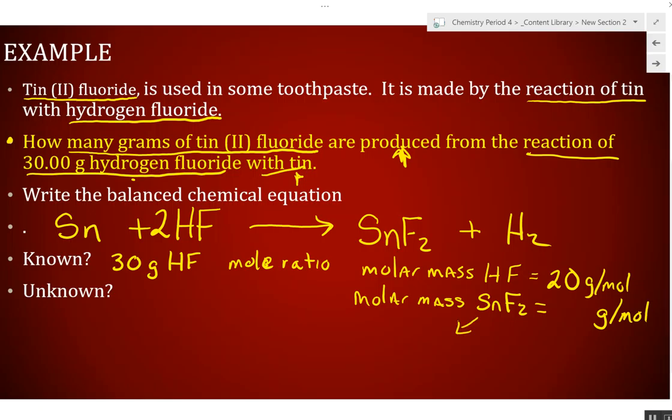Now, here comes the harder one. What's the molar mass of what we're looking for, SNF-2? What's the molar mass of SNF-2? What's SN weigh? 118.7, and what do two fluorines weigh together? Two fluorines, 38. So what's 118.7 plus 38? 156.7. What don't we know? We don't know grams of SNF2. So we were able to find a lot of stuff to help us solve this problem.